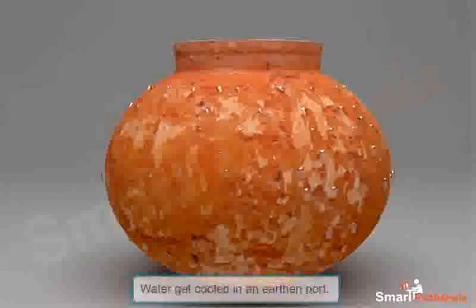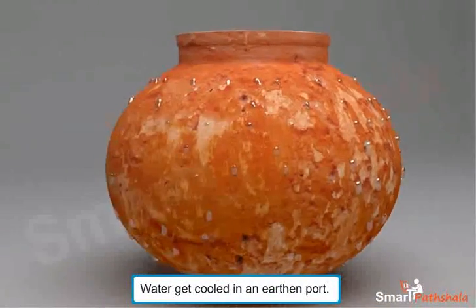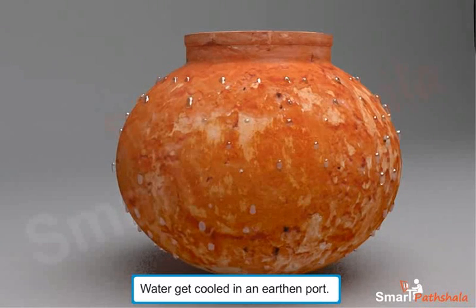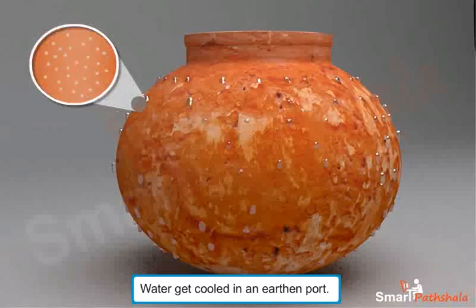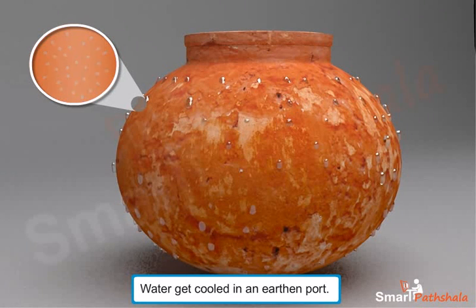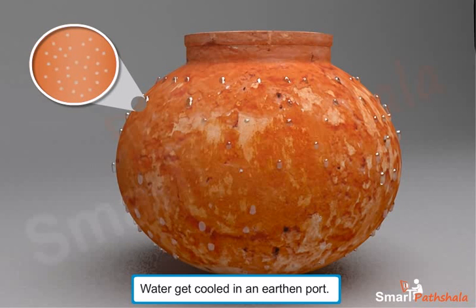We use water which gets cooled in an earthen pot in summer because an earthen pot has small pores in its walls. When water is poured into it, some of it seeps through these pores to its outer surface. The water from the outer surface evaporates by heat from the surrounding atmosphere, and as a result, the water in the earthen pot gets cooled down.